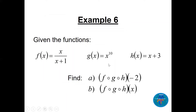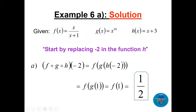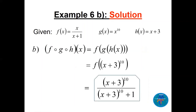Now with three functions f(x), g(x), and h(x), find (f∘g∘h)(−2). Replace −2 in h: −2 + 3 = 1. Then g(1): 1^10 = 1. Then f(1): 1/(1+1) = 1/2. In general (without a specific number), (f∘g∘h)(x): put h = x+3 into g to get (x+3)^10, then into f to get (x+3)^10 / [(x+3)^10 + 1].